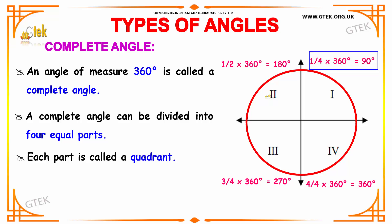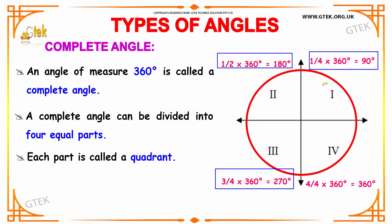Your second part makes half of the total 360, so half of 360 is 180 degrees. Your third part is three-fourths of 360, which is 270 degrees. The fourth part is four-fourths of 360, which is 360 itself. So one complete rotation makes the complete angle 360 degrees.